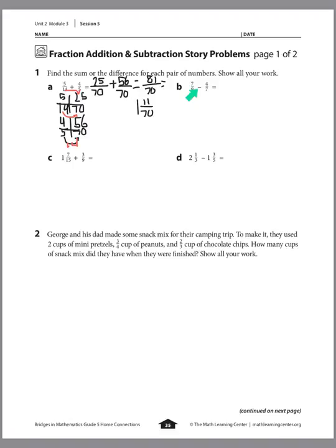Let's look at B. It says 7/9 minus 4/7. Again, we're thinking of the multiples of 9 and the multiples of 7 to see which ones match up. When I do that work, I know it's going to be 63. You can do the work on a ratio table, or you can say I want my denominators to be 63.